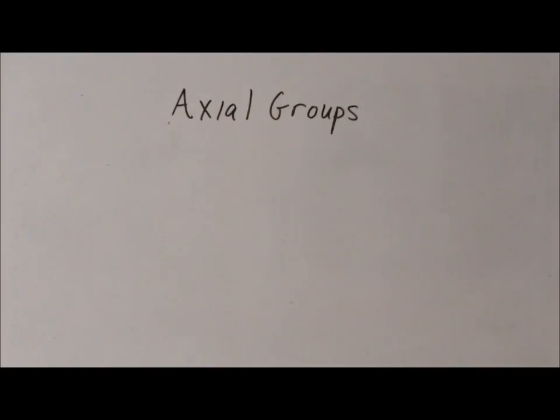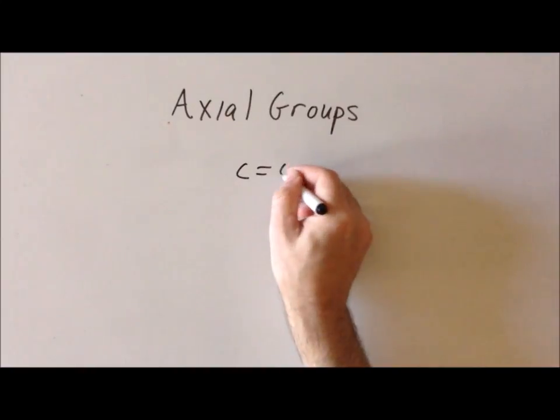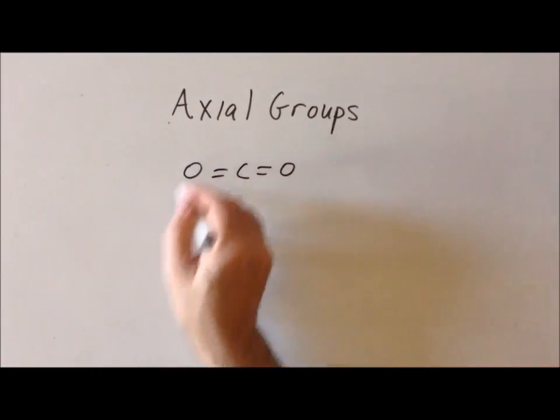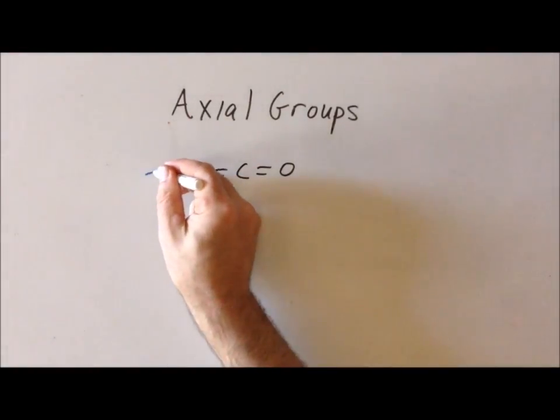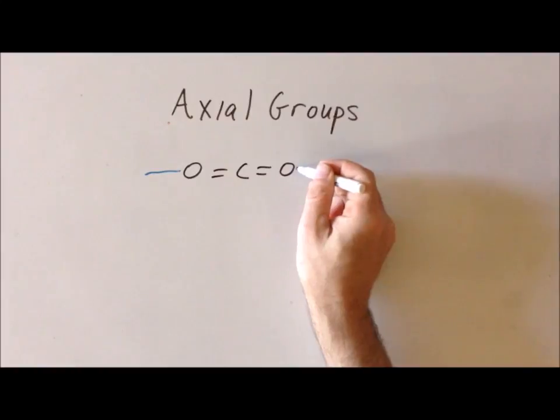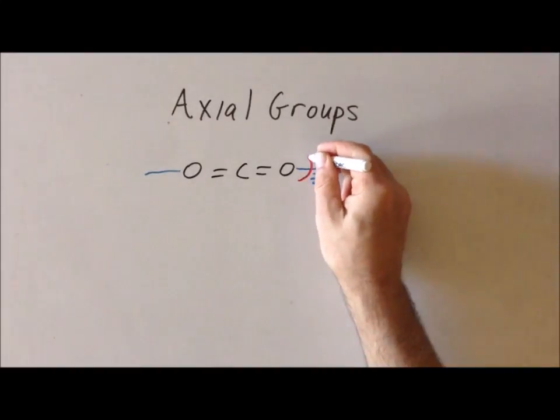The next molecule that we would like to consider is carbon dioxide. And again, we know from the VSEPR theory and other considerations that carbon dioxide is a linear molecule. We can define the axis along which it lies as the Z axis in this particular case.